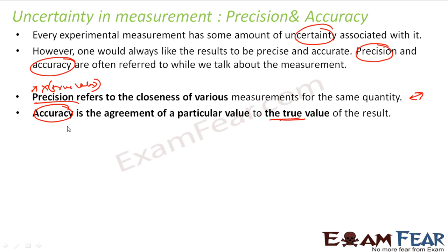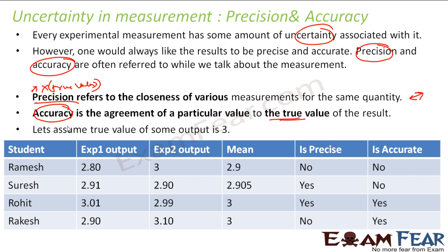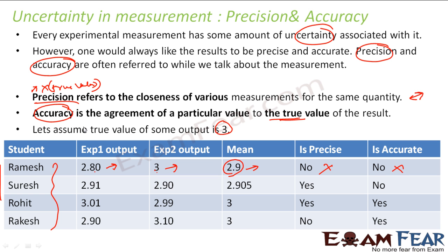Let's take this scenario. Suppose the true value is 3 and four people — Ramesh, Suresh, Rohit, and Rakesh — have done the experiment. For Ramesh, the first output is 2.8 and the second is 3, so the mean is 2.9. If you see 2.8 and 3, there is a huge difference — that means they are not even precise. And when you take the mean, it is 2.9 but the actual value is 3, so they are not even accurate. Accuracy means how close the result is to the accurate value of 3, and it is not close.